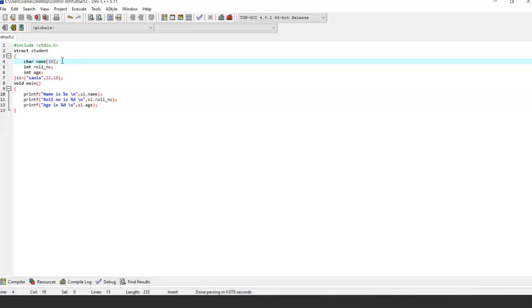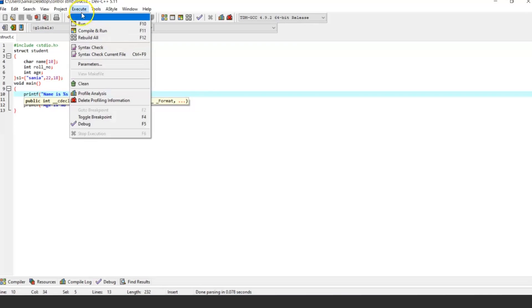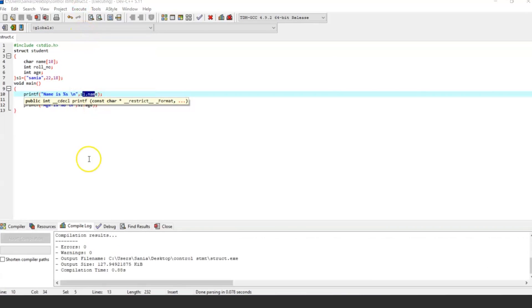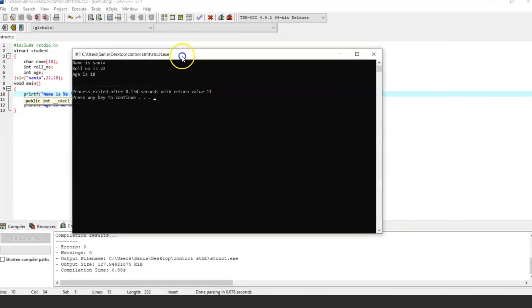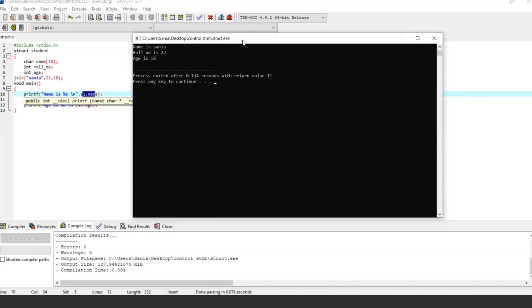As you can see, in this particular program using the structure, we have initialized the variables and trying to print the values. And by using the dot operator, we are accessing the members of a structure. So, now let's run it. And here we got an output. Name, row number, and age of a student structure.